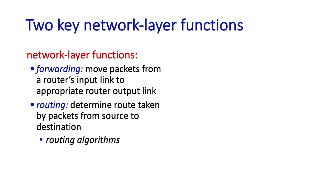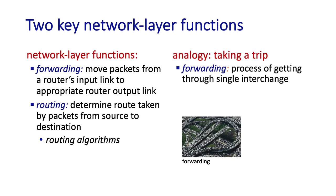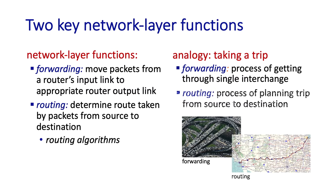A good analogy for the difference between forwarding and routing is the example of taking a trip by car. You could think of forwarding as the process of getting through a single interchange — going through a roundabout or an intersection. And routing is the process of planning and taking a trip all the way from the source city to the destination city, passing through many intersections.